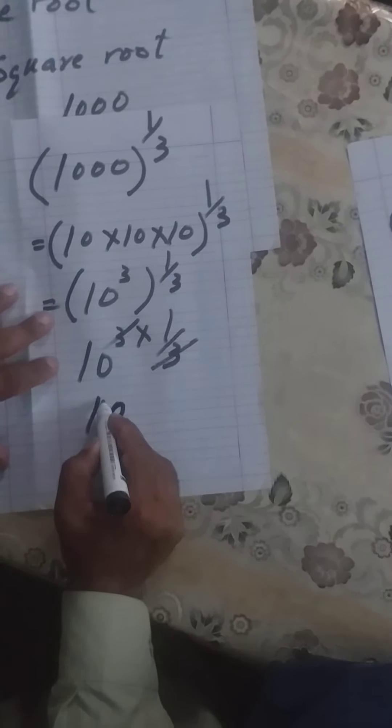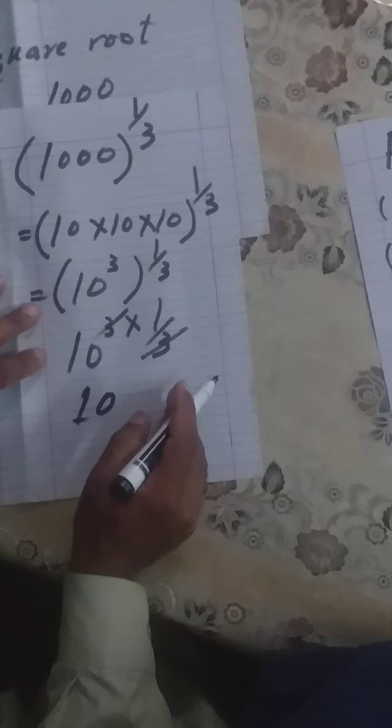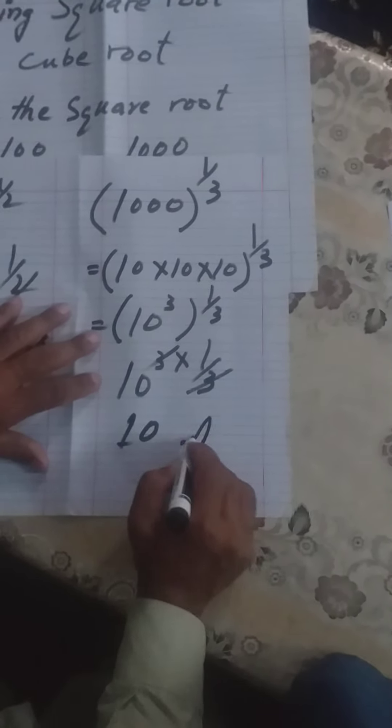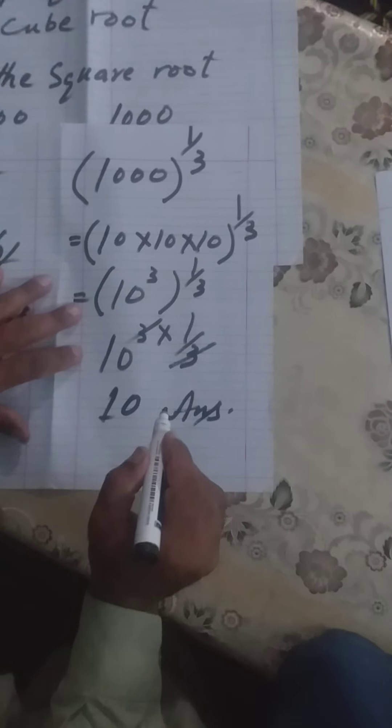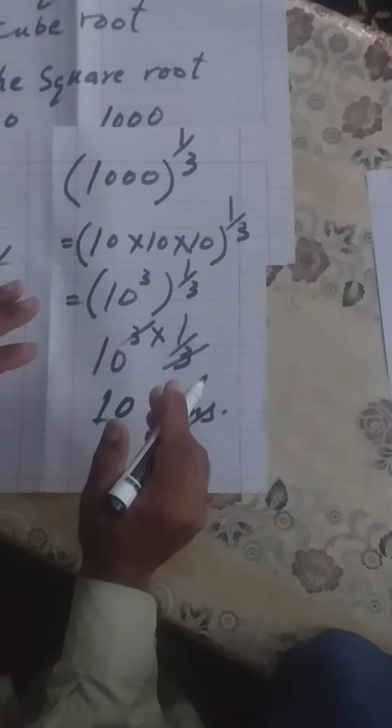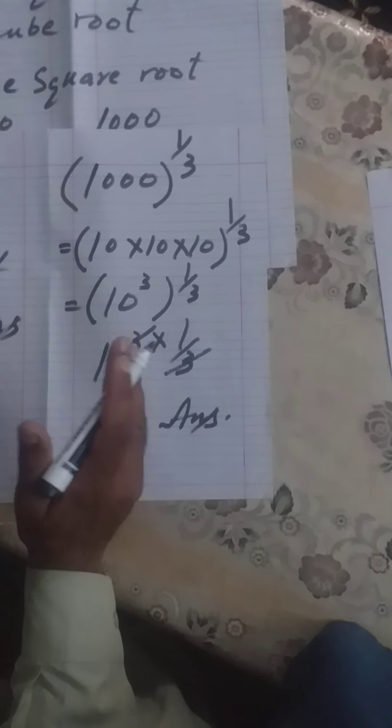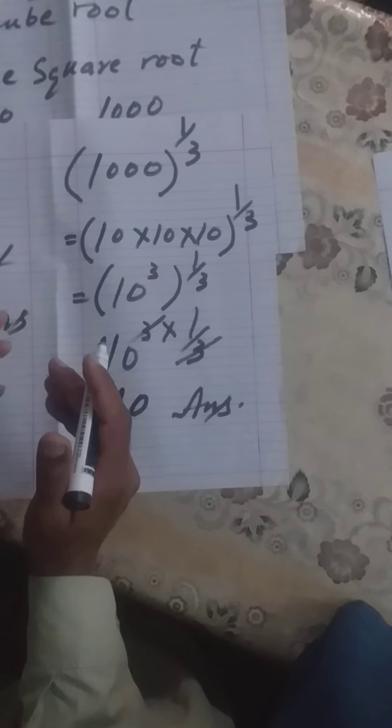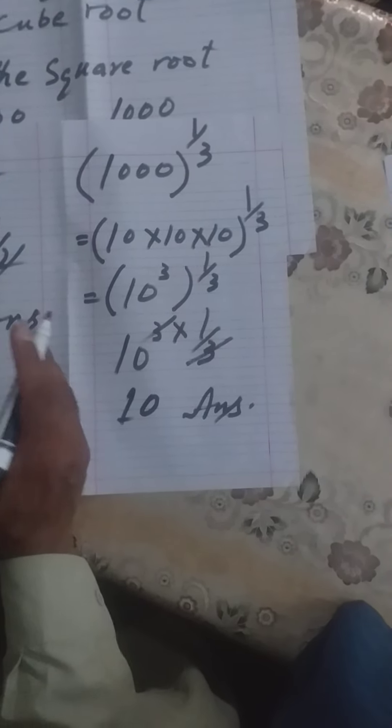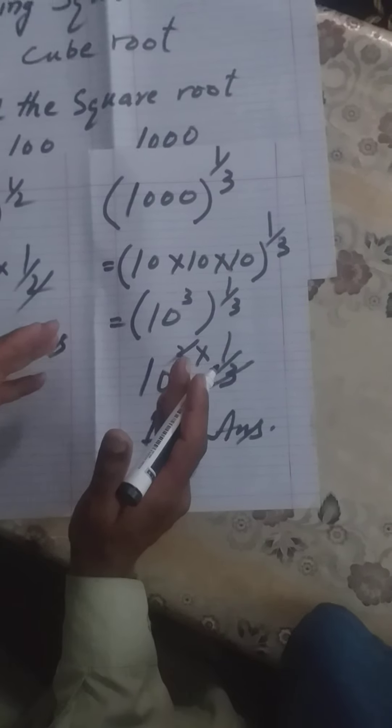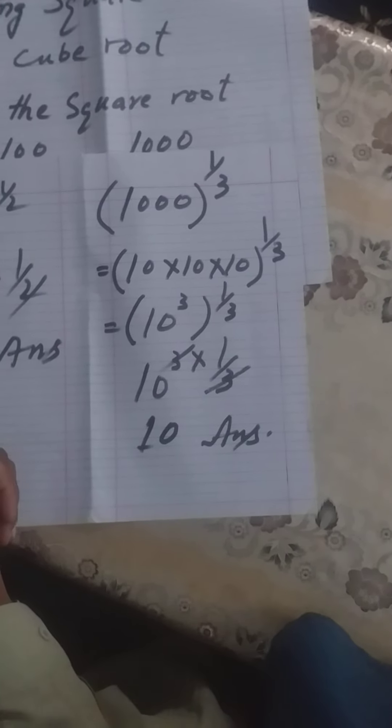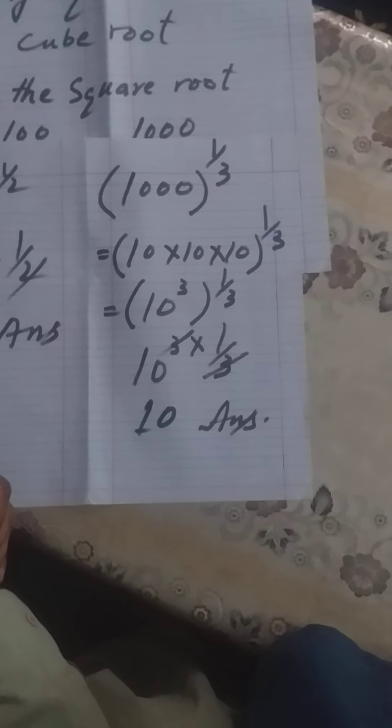In this way, its answer is also 10. That means 1000 ka cube root is 10, and this is the answer. Similarly, take many numbers, first find their square, then reverse and find their square root. In the same way, take some numbers, find their cube, and then reverse and find their cube root. If you practice this, it is very interesting and easy.